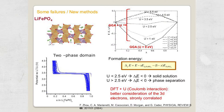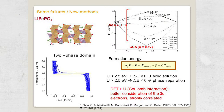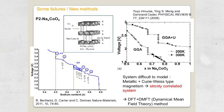More recently we have been working on the sodium chromate oxide system. We were interested in understanding the phase transformations occurring during sodium de-intercalation. As you can see in the electrochemical curve, we have a set of voltage plateaus and voltage jumps, and all of these intermediate phases are due to the formation of ordered sodium-vacancy ordering in the interslab space.